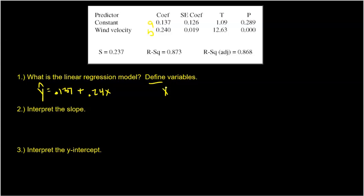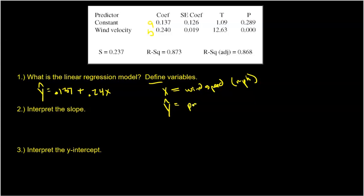Make sure you define the variables. X is the wind speed in miles per hour. I get a lot of students who try to talk about slope and Y-intercept as variables — those are coefficients. And make sure we include units. Y-hat is the predicted electricity output, measured in amps.